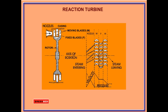The moving blade converts the kinetic energy into mechanical work with a decrease of velocity. But at the same time, steam expands as it flows over the moving blade and there is a fall of pressure. This produces a reaction on the blade by the expanding steam. Thus, in the reaction turbine, the steam expands both in fixed and moving blades continuously as the steam passes over them. Therefore, the pressure drop occurs gradually and continuously over both fixed and moving blades.